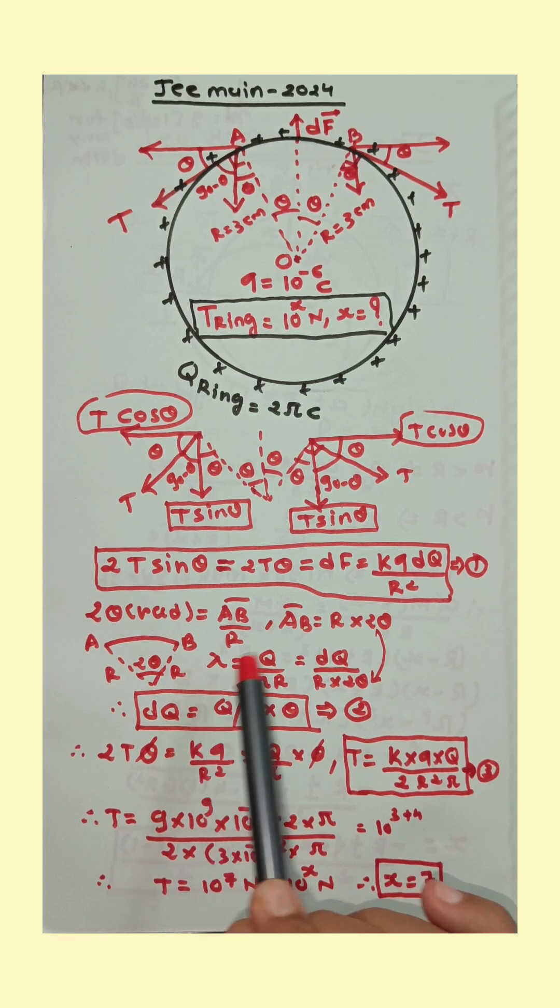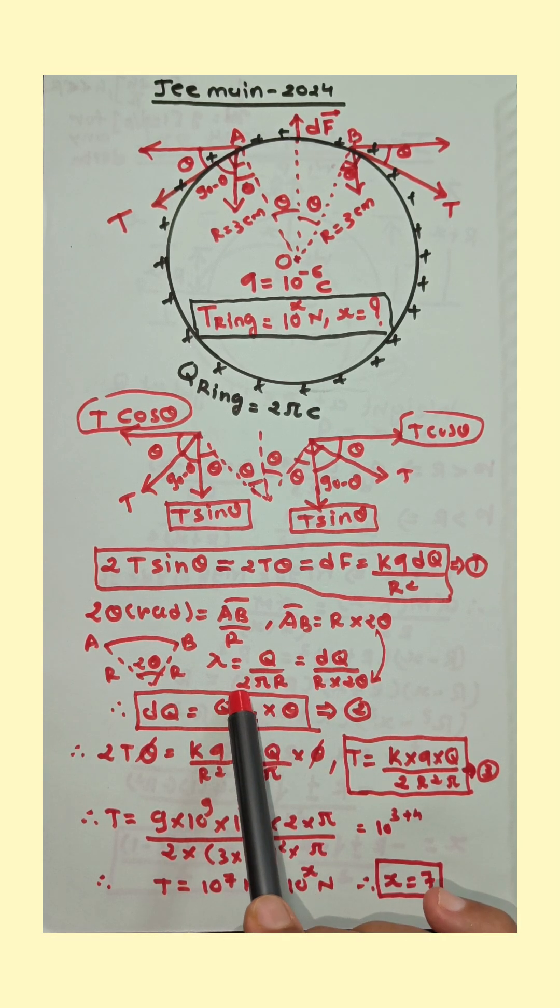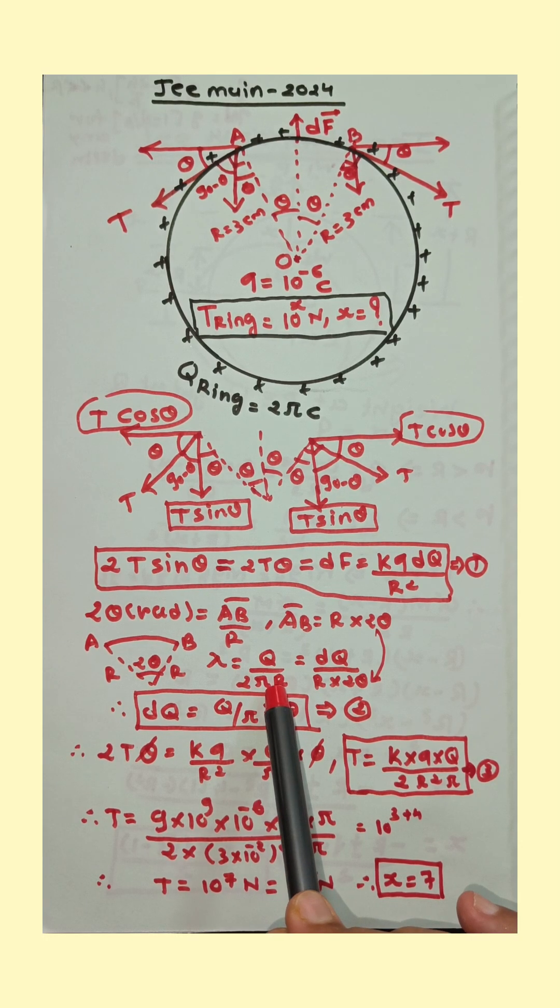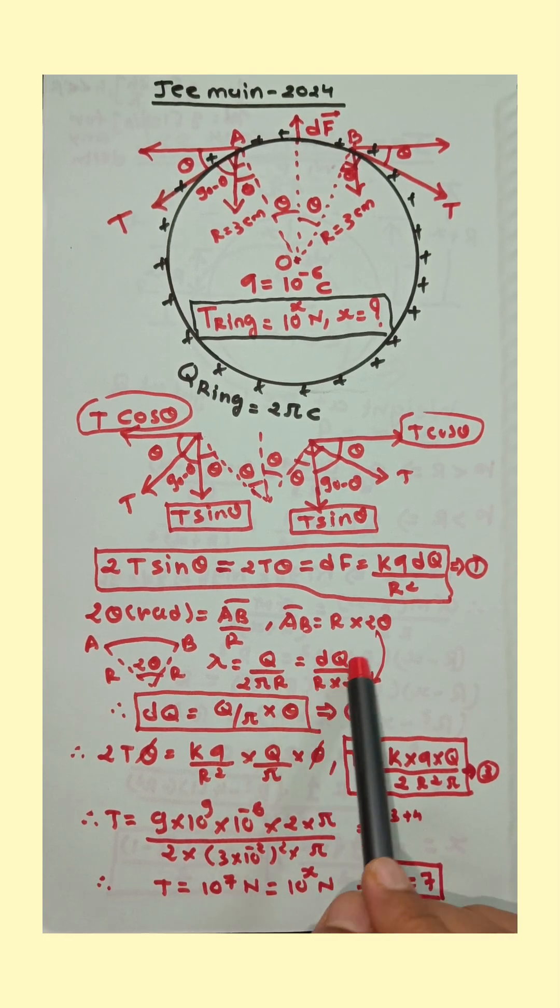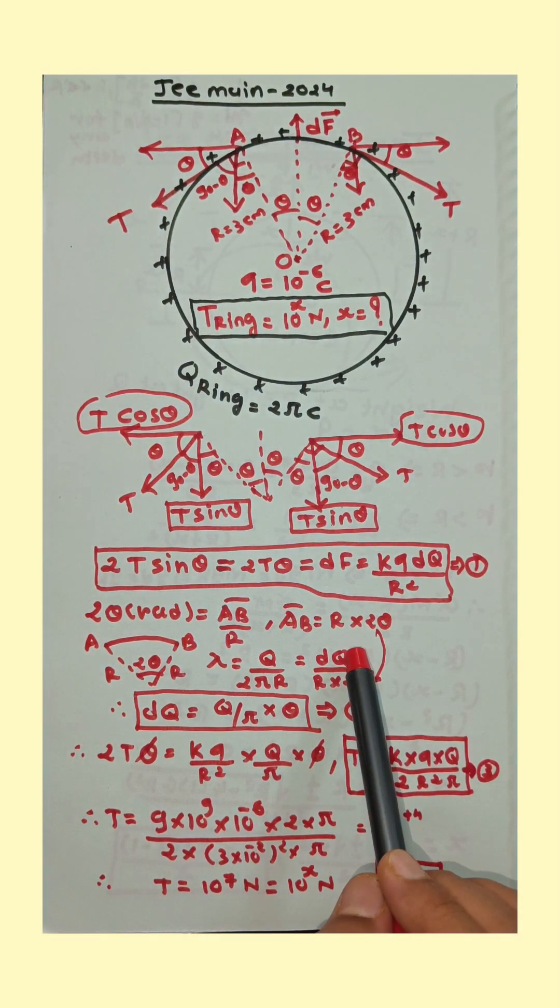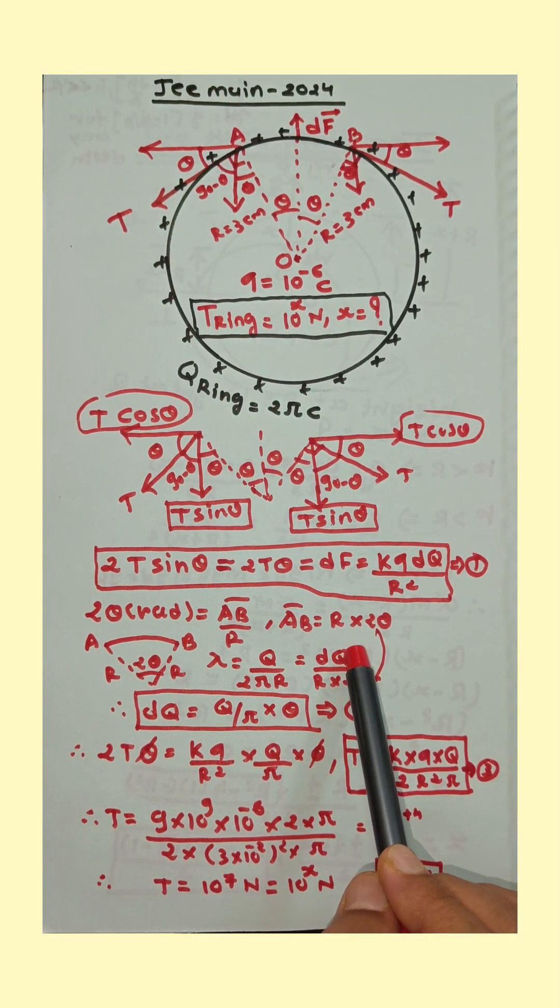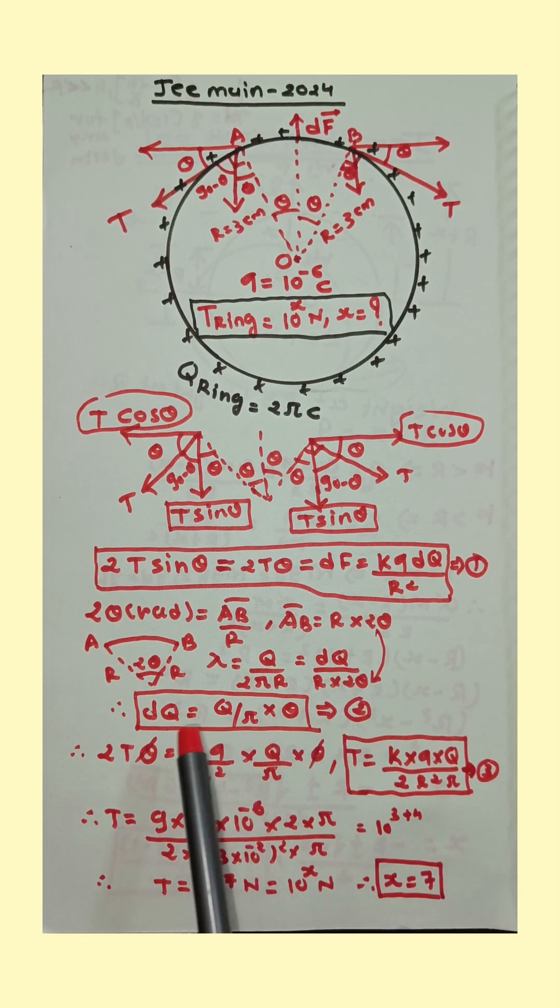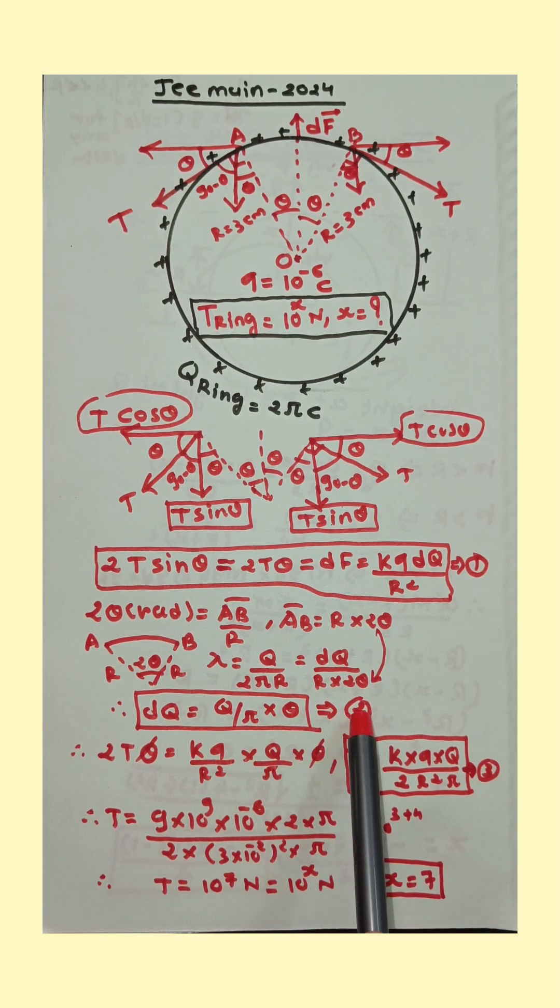Linear charge density is equal to charge upon length. Total charge on the ring is Q. Circumference is 2πr. But when we consider small portion of the ring, it means AB portion, then charge on AB is dq. And length of AB is r into 2 theta. From this dq is equal to Q upon π into theta. Equation number two.